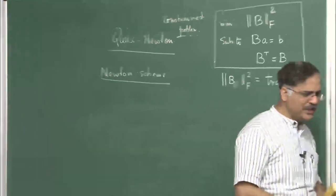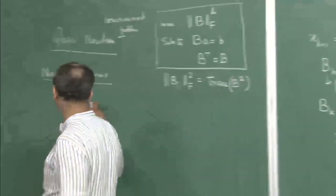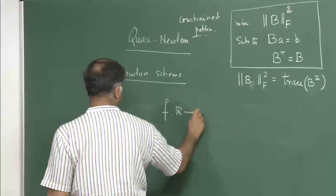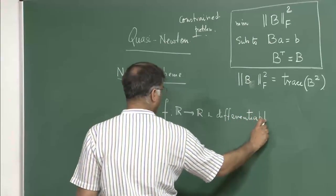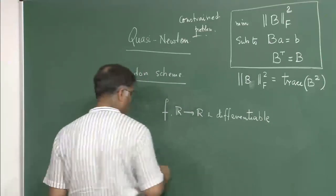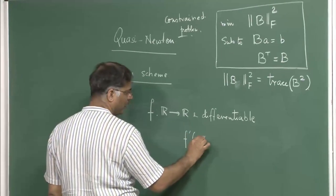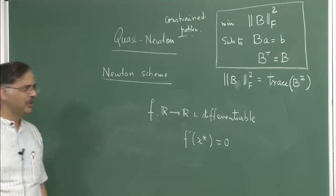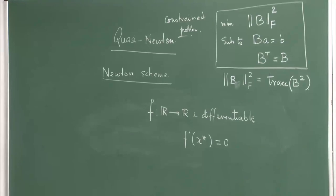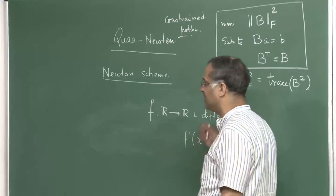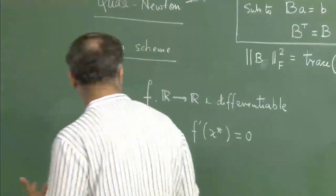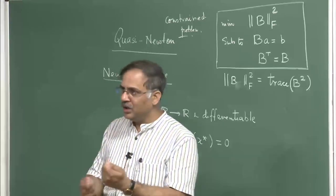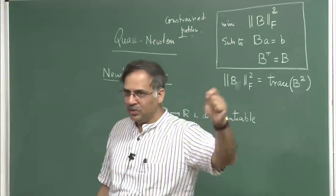One basic fact is that if you have a differentiable function from ℝ to ℝ and you want to find a minimizer x*, then you must first find x* such that f'(x*) equals 0. Any x* satisfying this need not be a minimum, but if x* is already known to be a minimum, it must satisfy this. This is a necessary condition, and in optimization, the study of necessary conditions is very important because it helps identify points to suspect as minima or maxima.